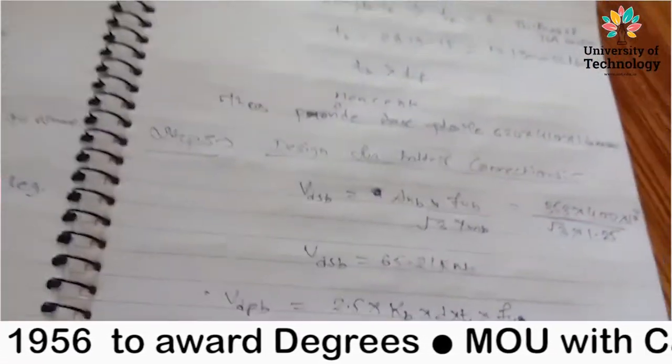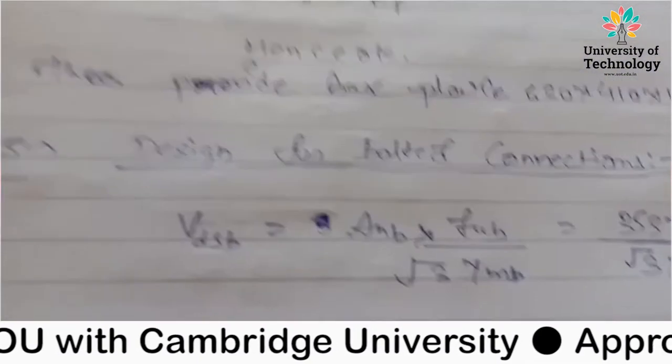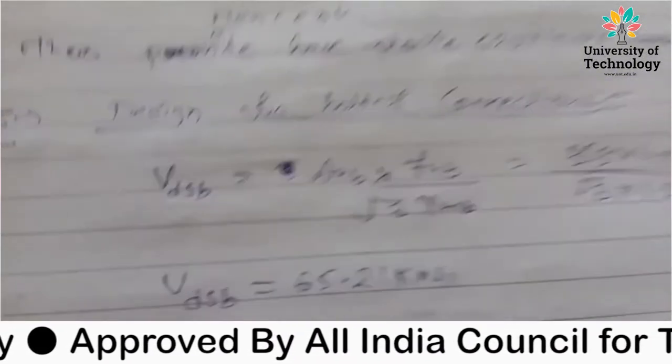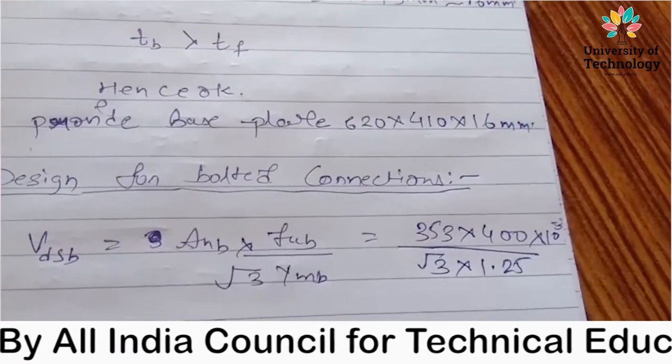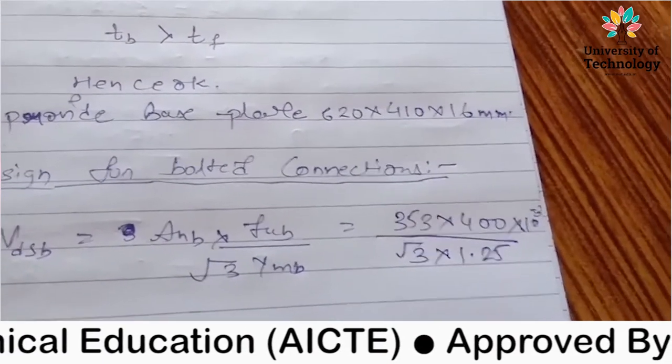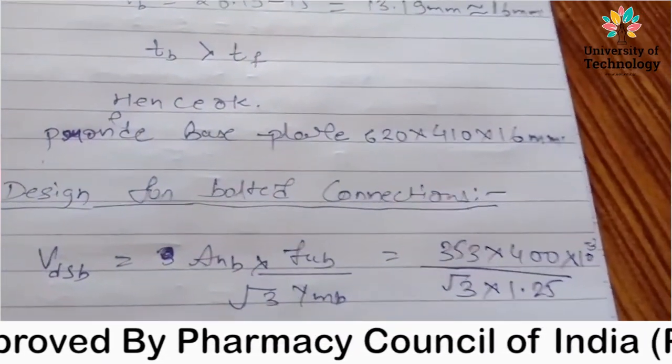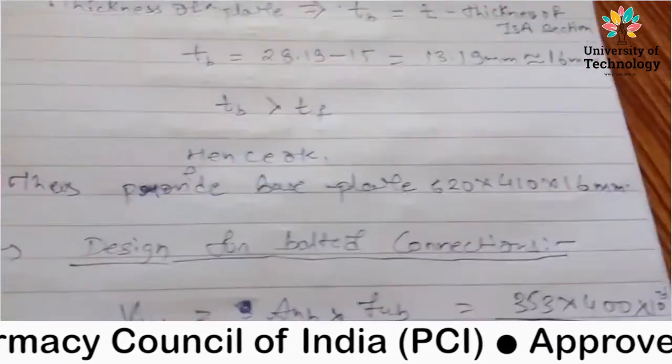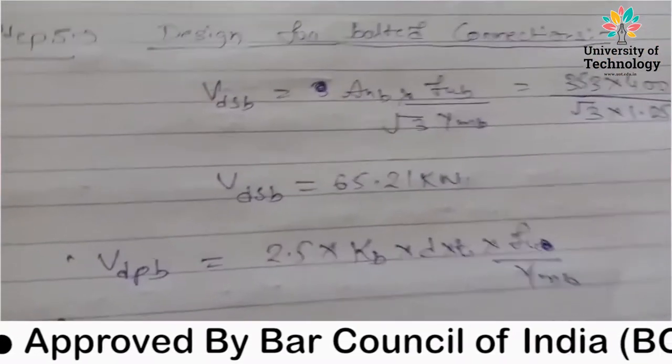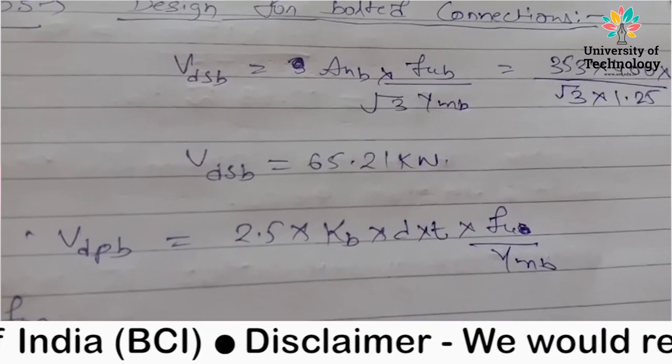I have designed for bolted connection. Here the bolted connection will be checked, so we will check VDsb shear, bearing, tension. Here we have only 2 tasks for shear. VDsb equals ANB into FUB upon root 3 into gamma MB. ANB value, 353, FUB into 10k power cube, 10k power minus 3 kN convert upon root 3 into gamma MB, gamma MB value for bolted is 1.25.